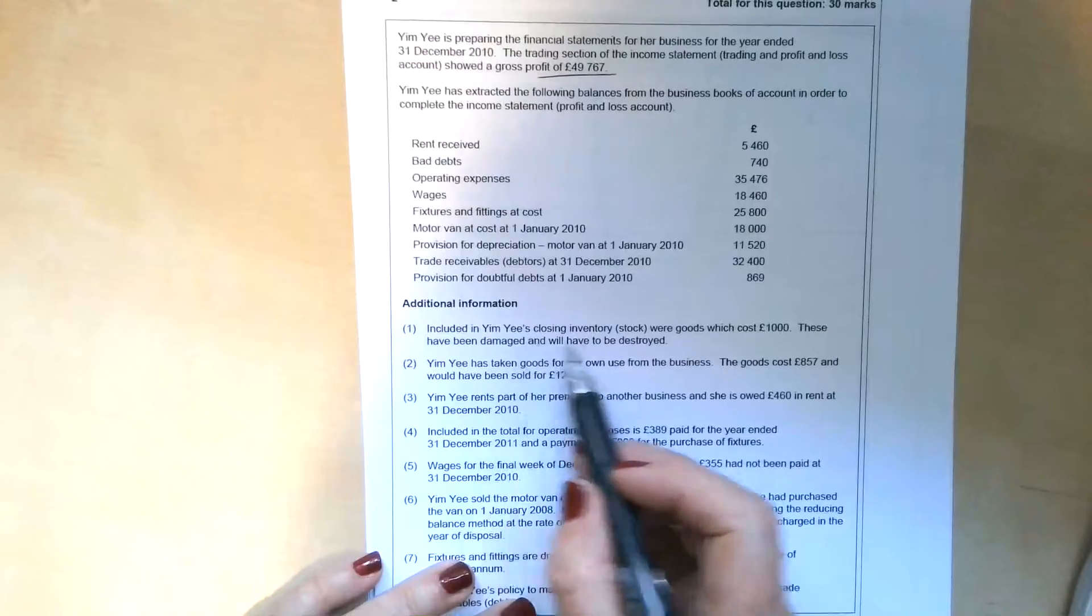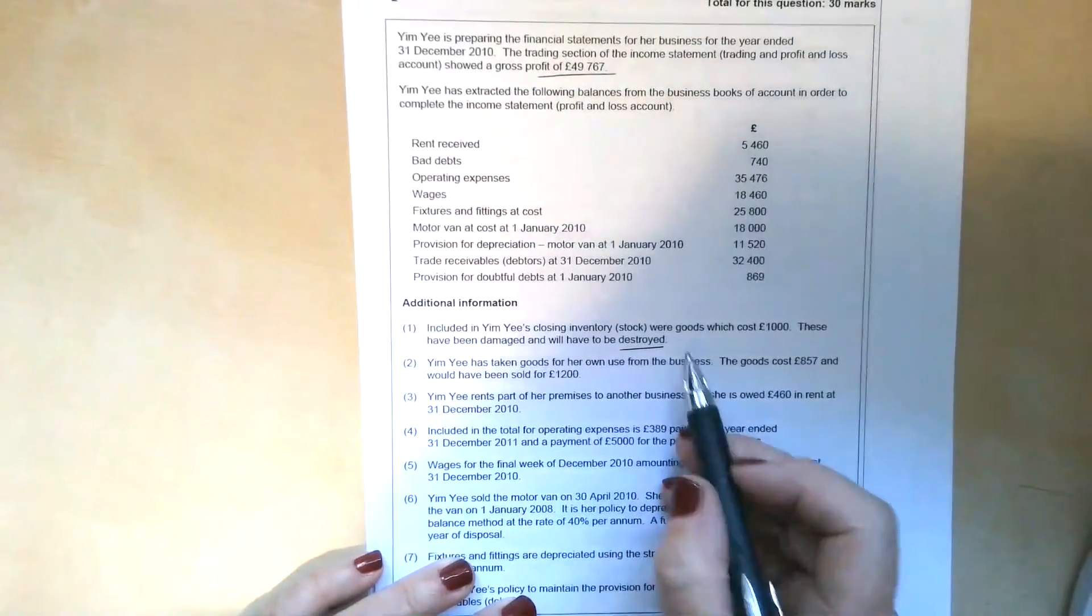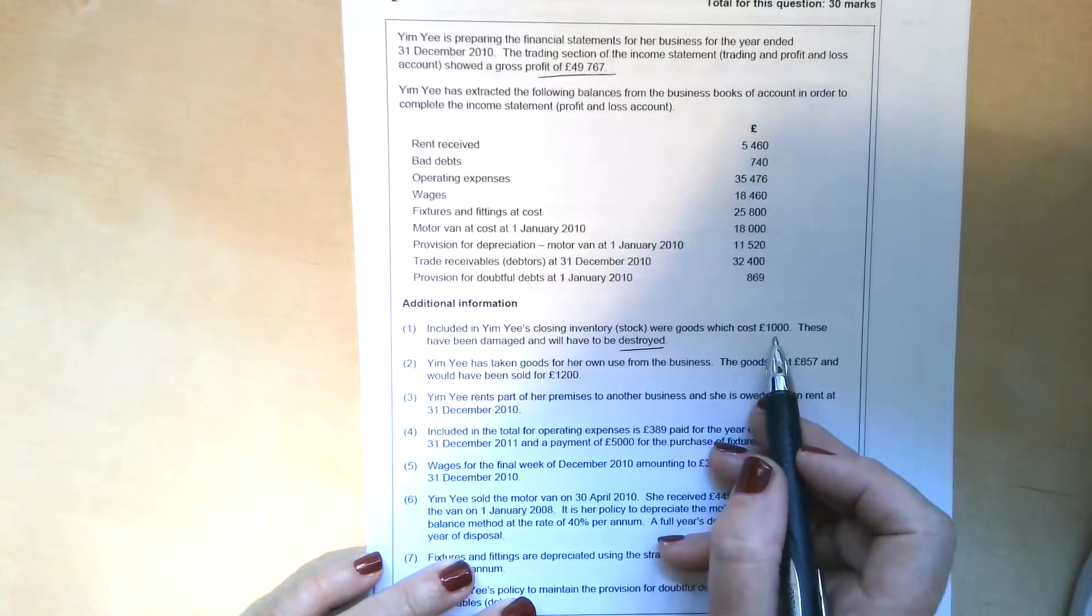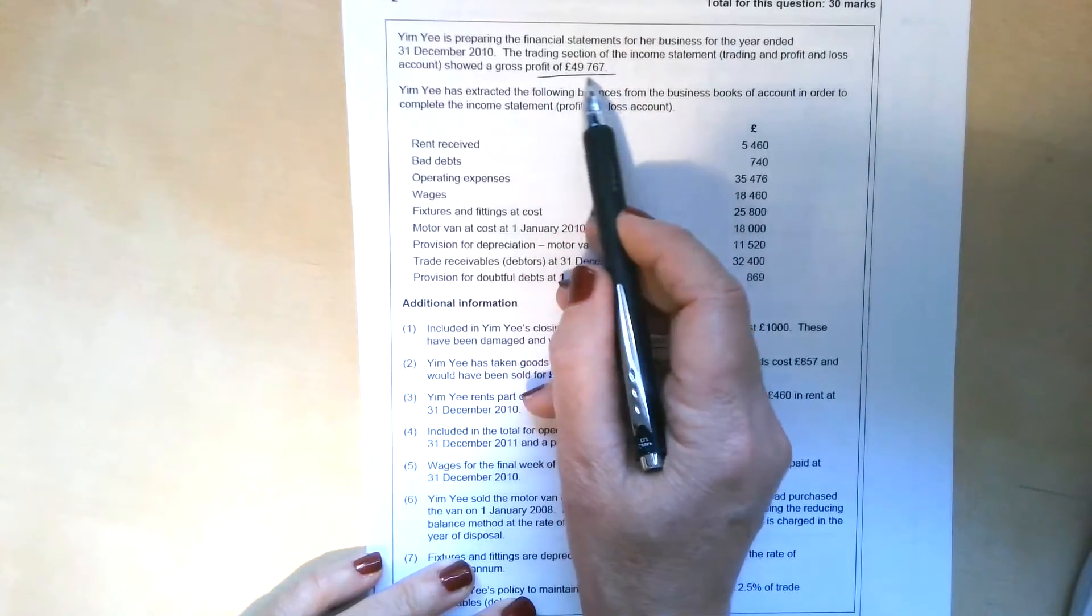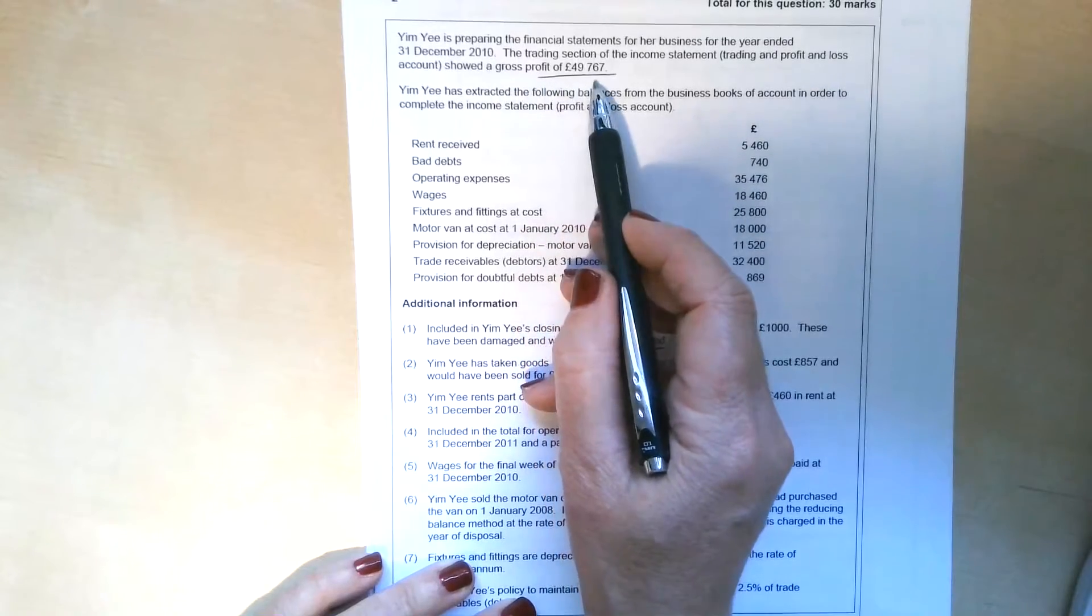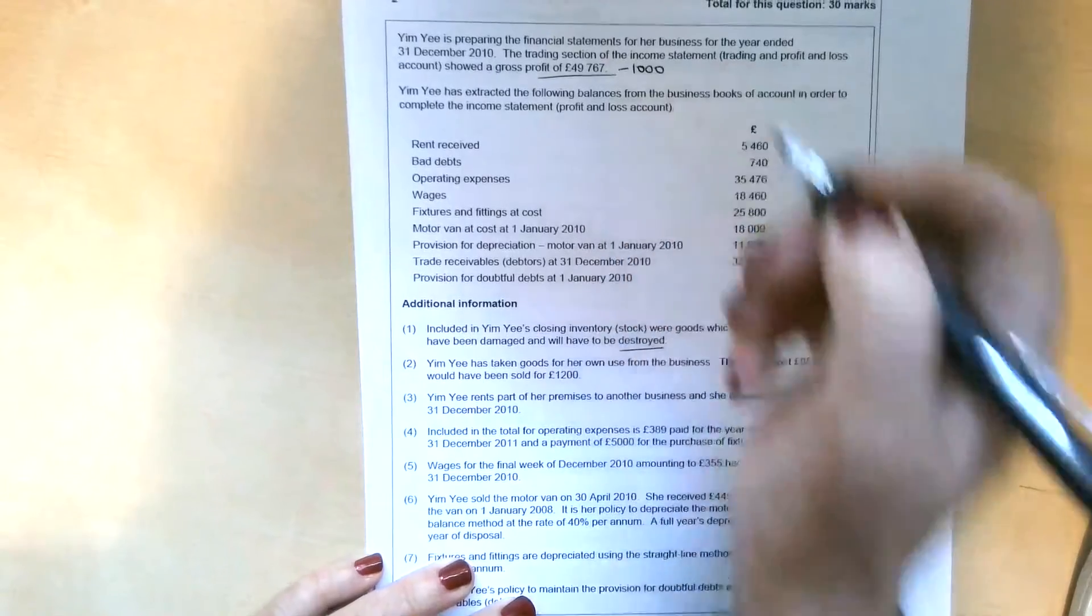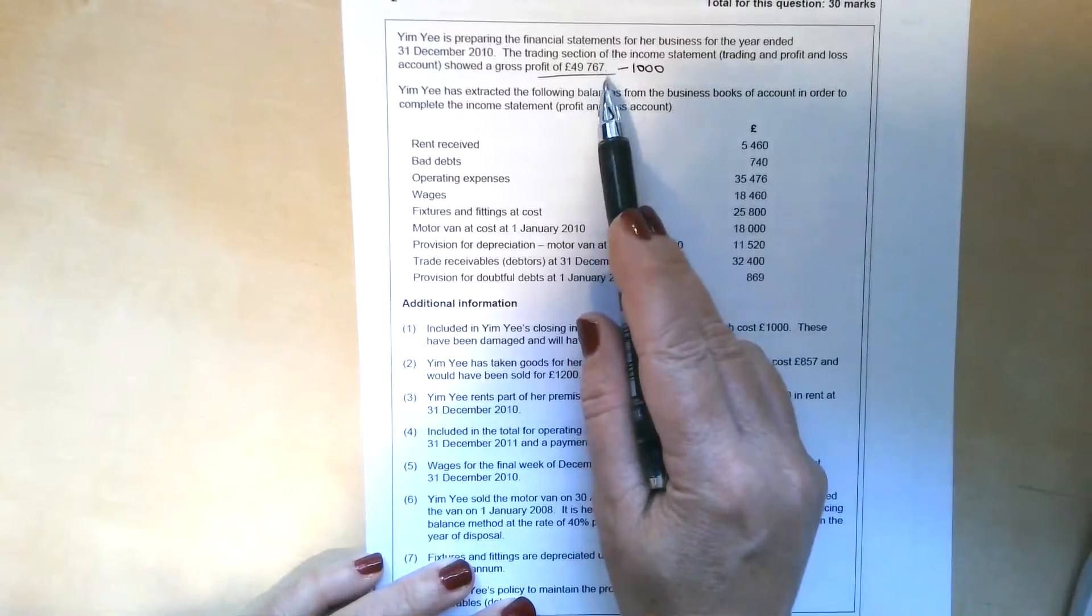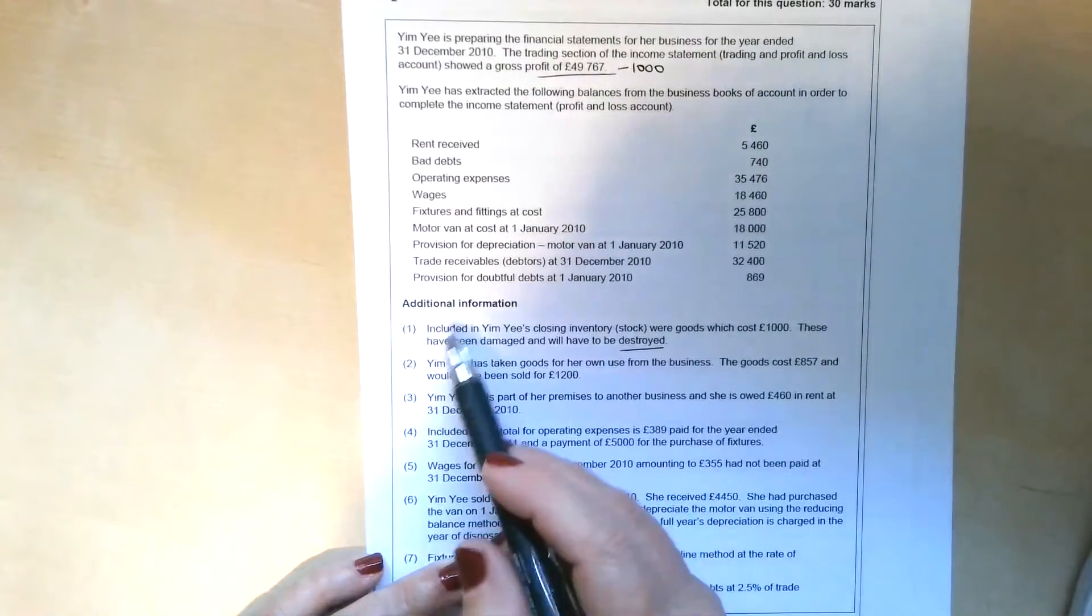It tells us that included in Yim Yi's closing inventory were goods which cost £1,000. These have been damaged and will have to be destroyed. So what we need to do is remove £1,000 from the closing inventory. Closing inventory would have been deducted from cost of sales when we came up with this gross profit figure. So if we reduce that deduction by £1,000, cost of sales will go up, and it means that gross profit will go down by £1,000. So reduction in inventory means reduction in profit and a reduction in the value of the assets.